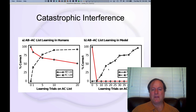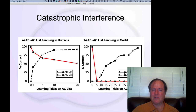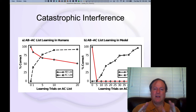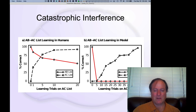Our first step is to see why it is that the system experiences this catastrophic level of interference. In so doing, we can understand why it happens, how we might fix it, and why we might not want to fix it in certain cases. That's the most interesting thing — fixing it may produce a tradeoff. It might improve memory, but we might lose something in the bargain. And that's really the key point about the complementary learning systems framework.